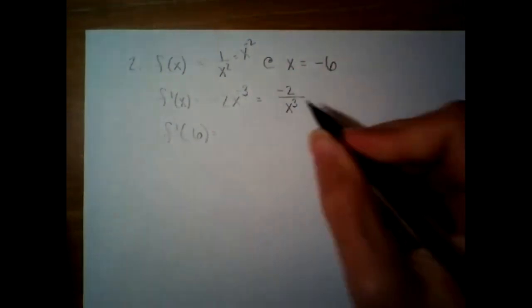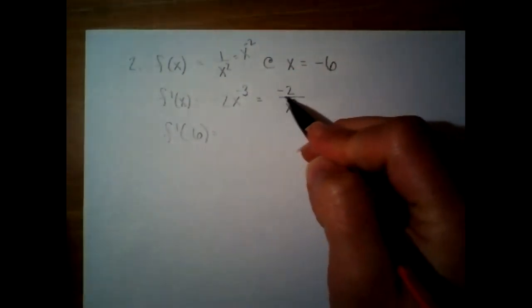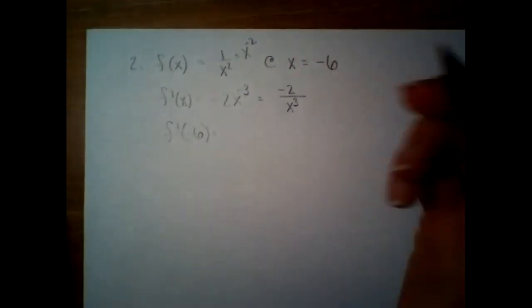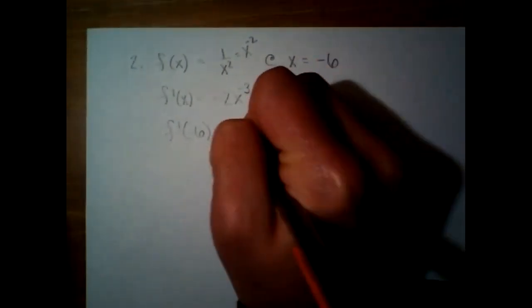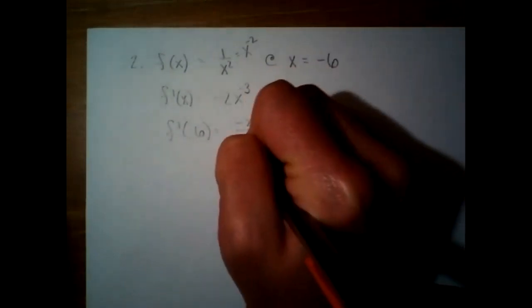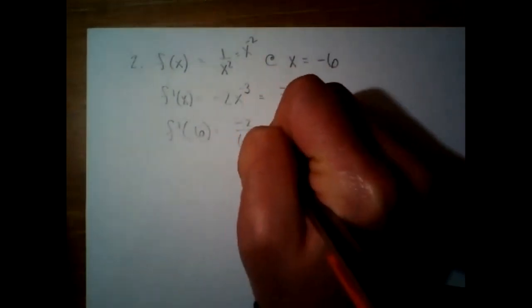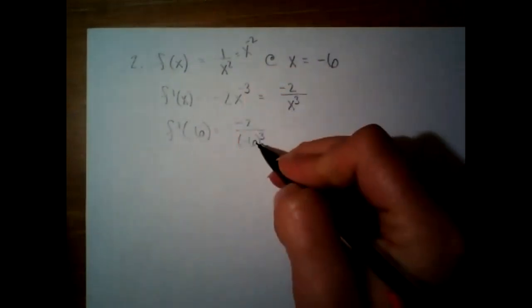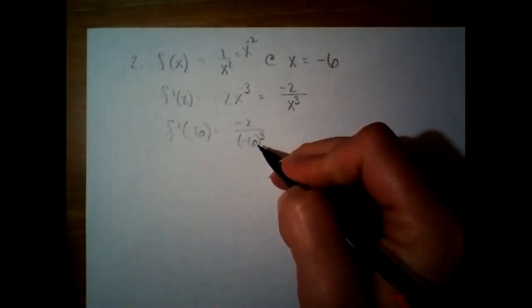The negative exponent means we're going to divide. And then we're going to plug in negative six for x. In all honesty, you could leave it like that. You don't have to reduce, you don't have to simplify.